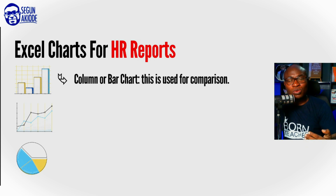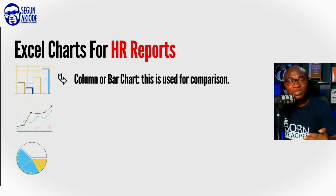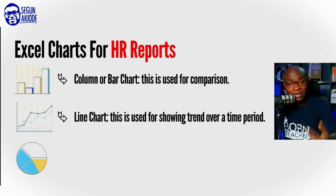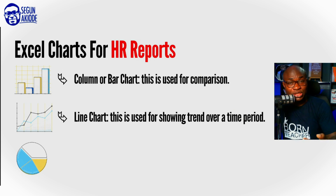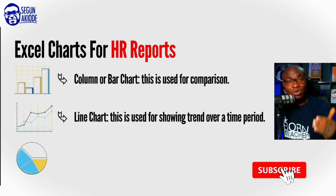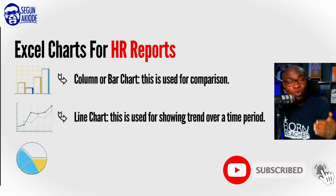The first one that is very critical is the use of your column or your bar chart. This is usually used when you need to do comparison. Another critical Excel charting option you need to get familiar with is the use of your line chart. Your line chart is very useful when you need to show trend with time — trend over a period of time.